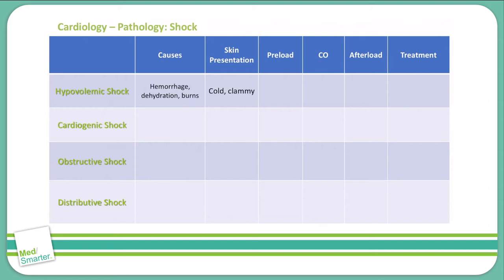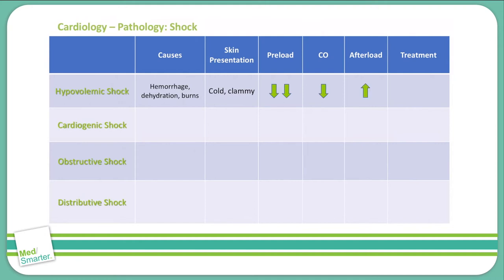The skin presentation of hypovolemic shock is cold and clammy. Physiologically, we see a large decrease in the preload on the heart. Since we're completely decreasing the total blood volume, there's going to be less blood coming back to the heart. We also decrease our cardiac output — when there's less coming back to pump, there's less that's going to be pumped out. Finally, our afterload will increase as a compensatory mechanism of the body to adjust for that decrease in cardiac output.